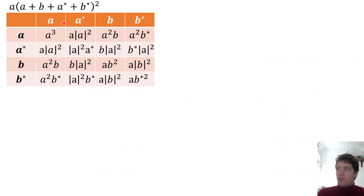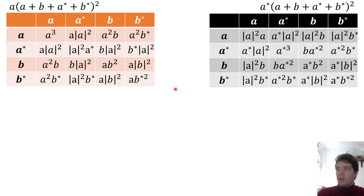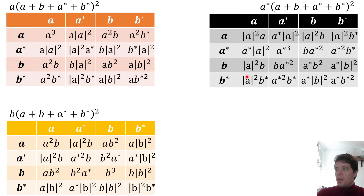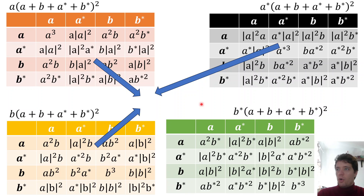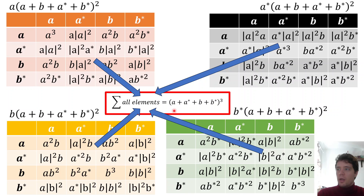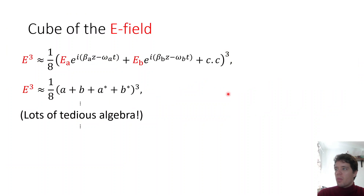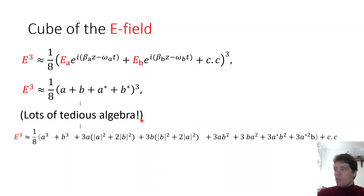Multiplying A onto the table gives one set of terms, A conjugate gives another, and so on for B and B conjugate. Adding together all the terms from these four tables gives the cube of the bracket, and multiplying by 1/8 gives the cube of the E field. Going through all of that algebra, we get an expression for the cube of the electric field by collecting all terms that behave the same way.